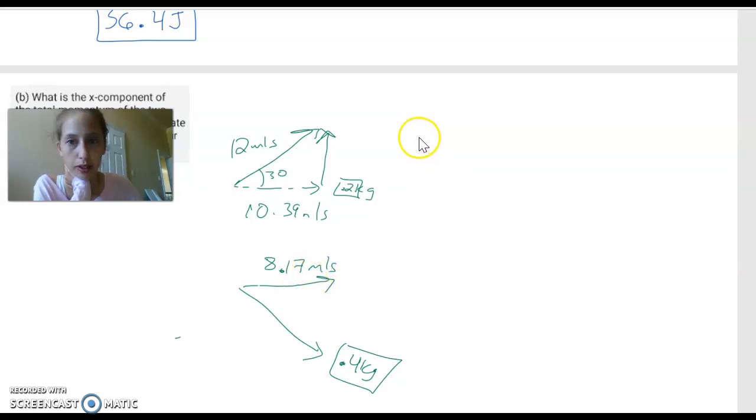Okay. We have momentum. The letter's P. I call it pulmentum. So the pulmentum in the x direction. We have mass times velocity of the first thing, plus mass times velocity of the second thing. The mass of the first thing is 0.2. The velocity is 10.39. Plus the mass of the second thing is 0.4. And the velocity is 8.17. Boom. That's it.